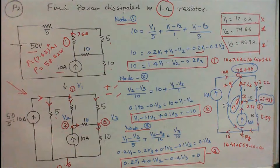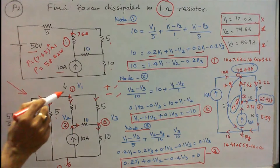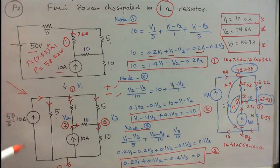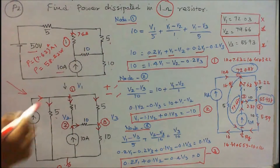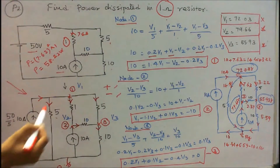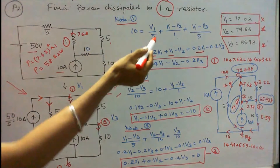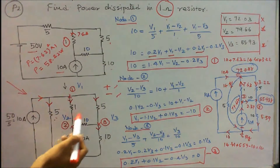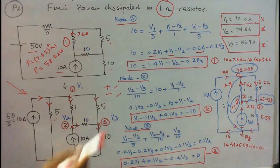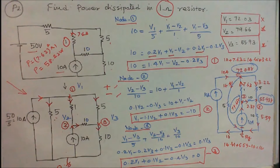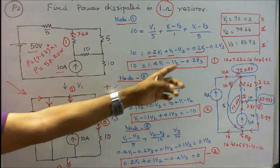Now I write the nodal equations. At node 1, current towards node 1 is 10, so: 10 = V1/5 + (V1 - V2)/1 + (V1 - V3)/5. Simplifying: 10 = 1.4·V1 - V2 - 0.2·V3. This is equation 1.